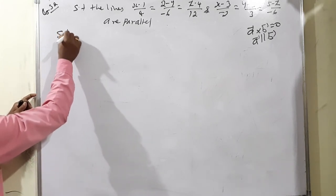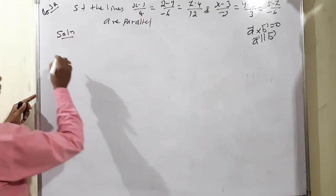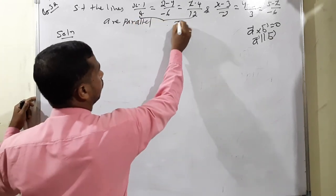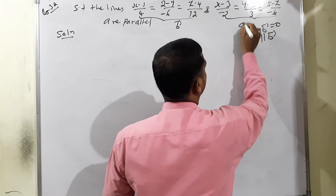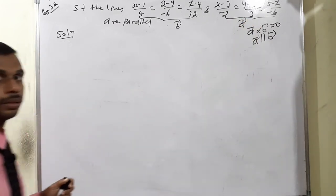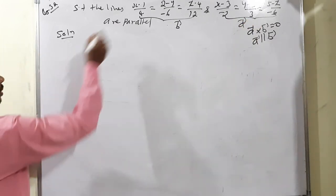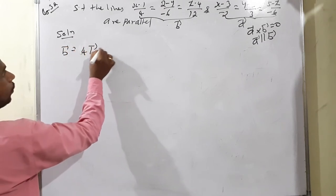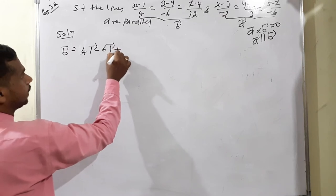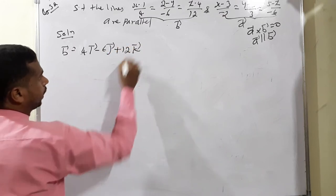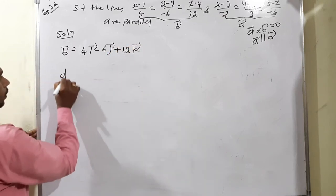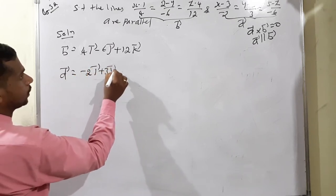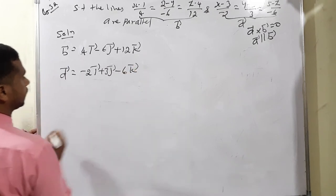Therefore b vector equals 4i minus 6j plus 12k, and d vector equals negative 2i plus 3j minus 6k. We need to apply b cross d. If the result is 0, then b and d are parallel, meaning the lines are also parallel.